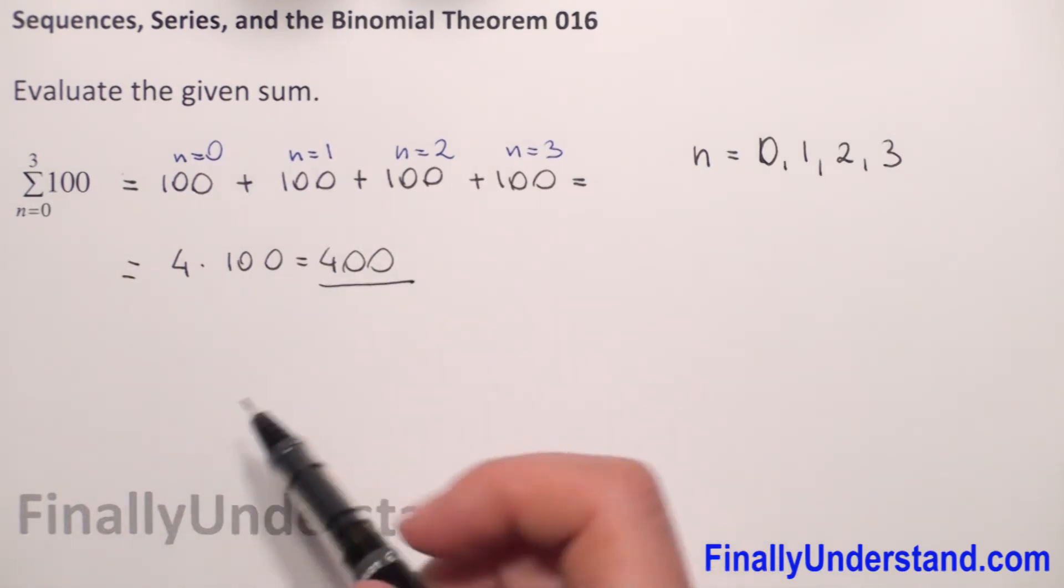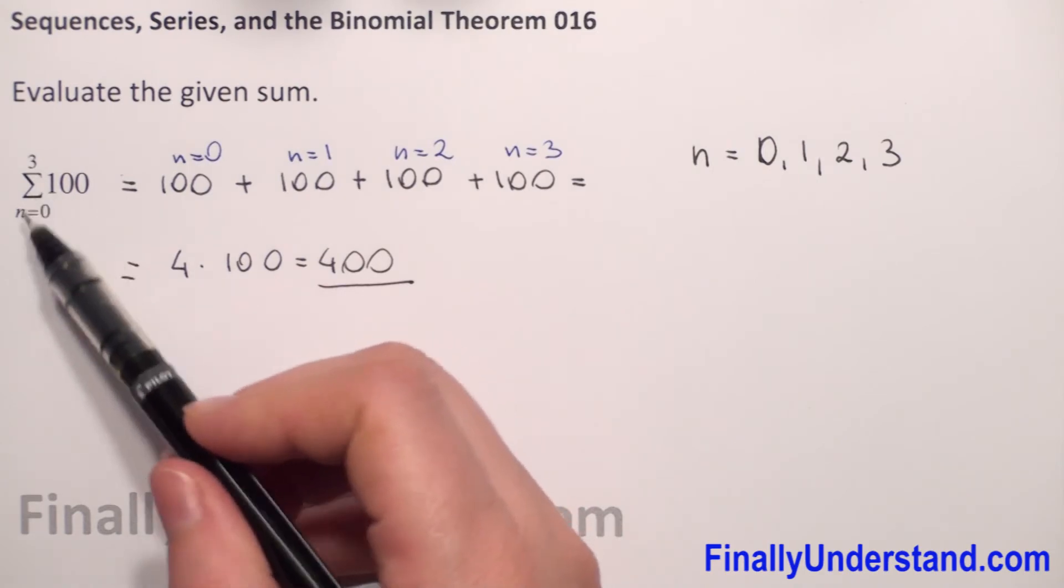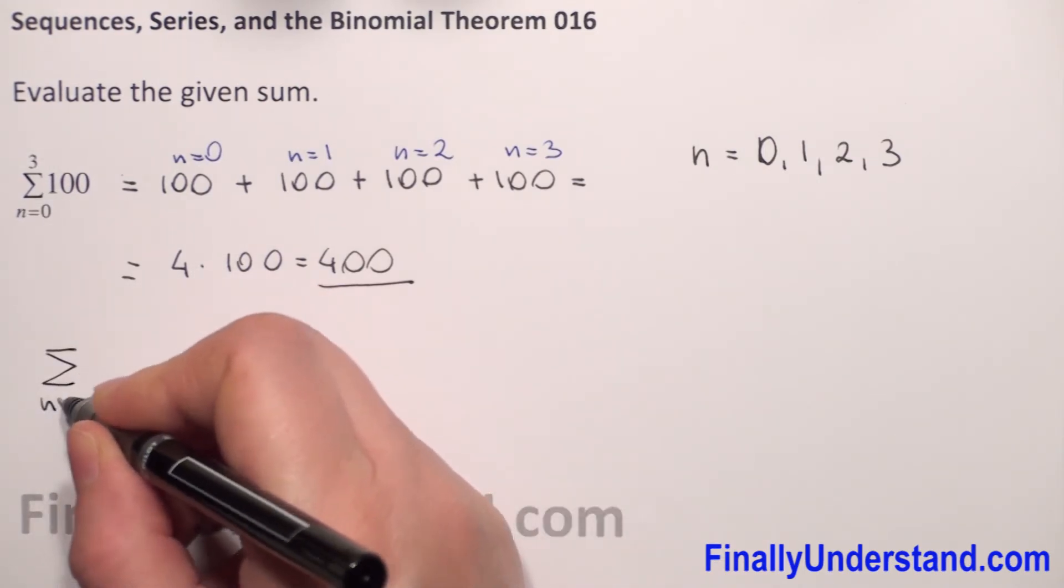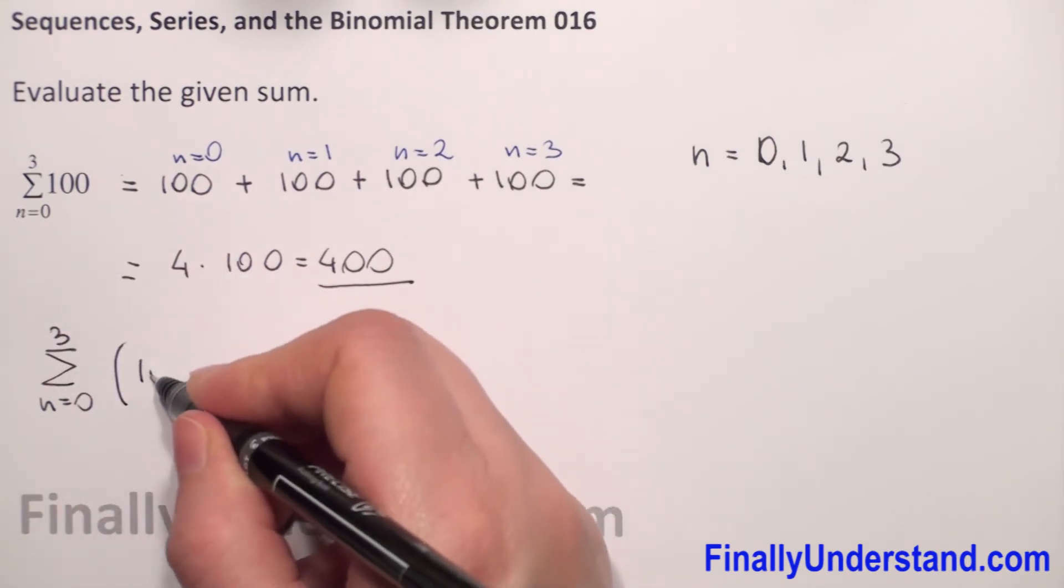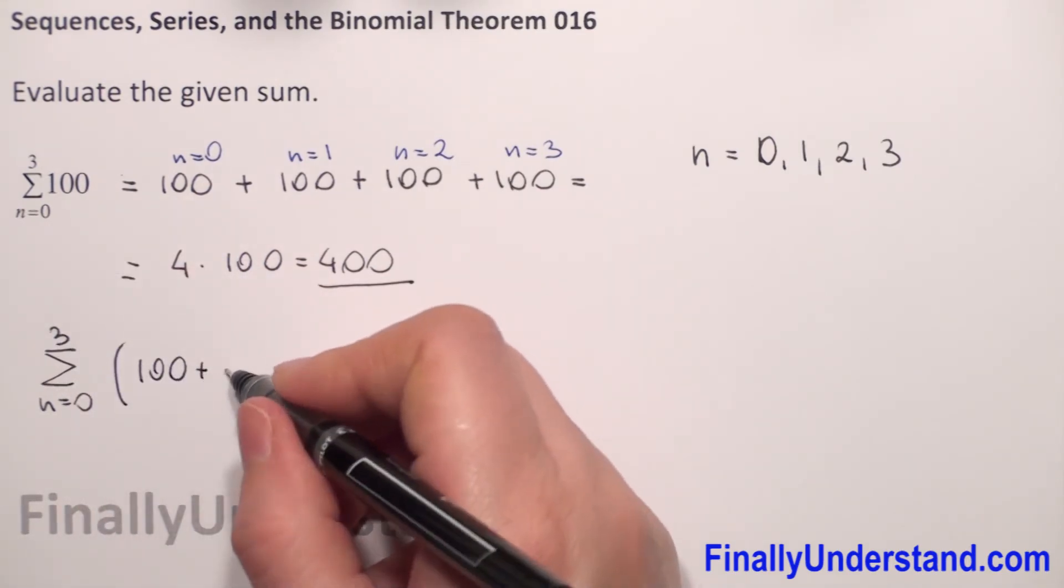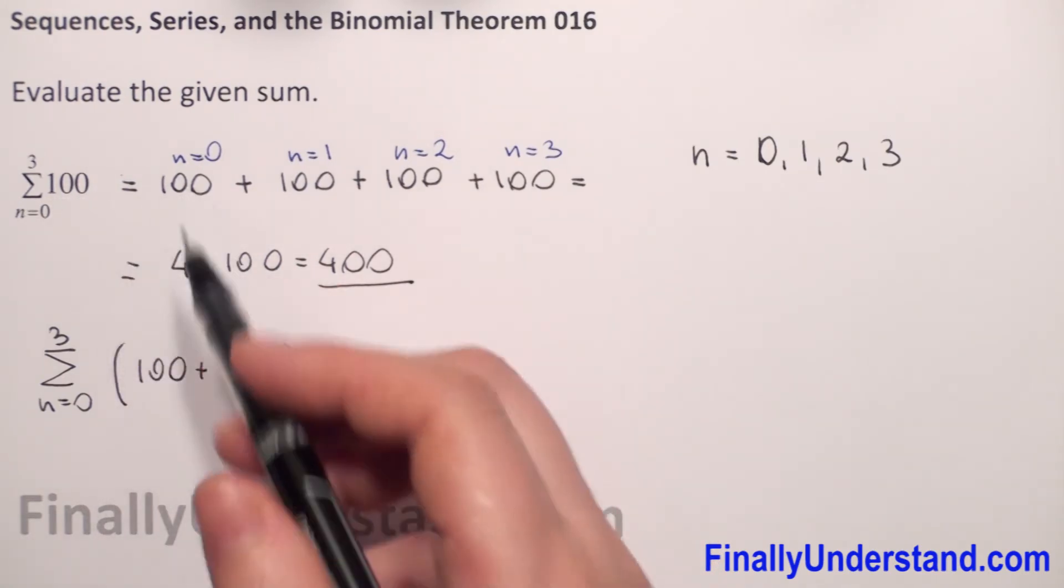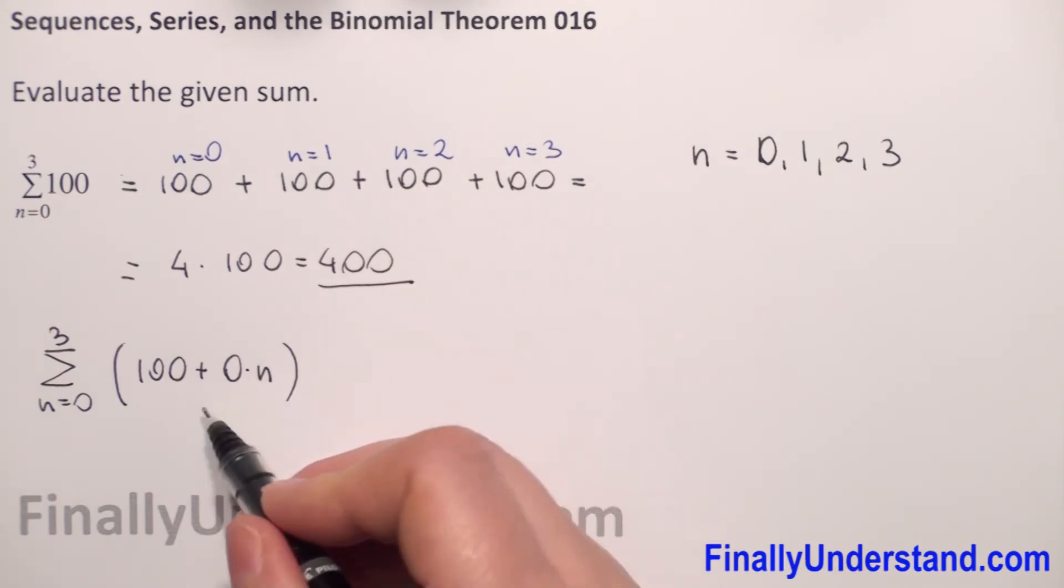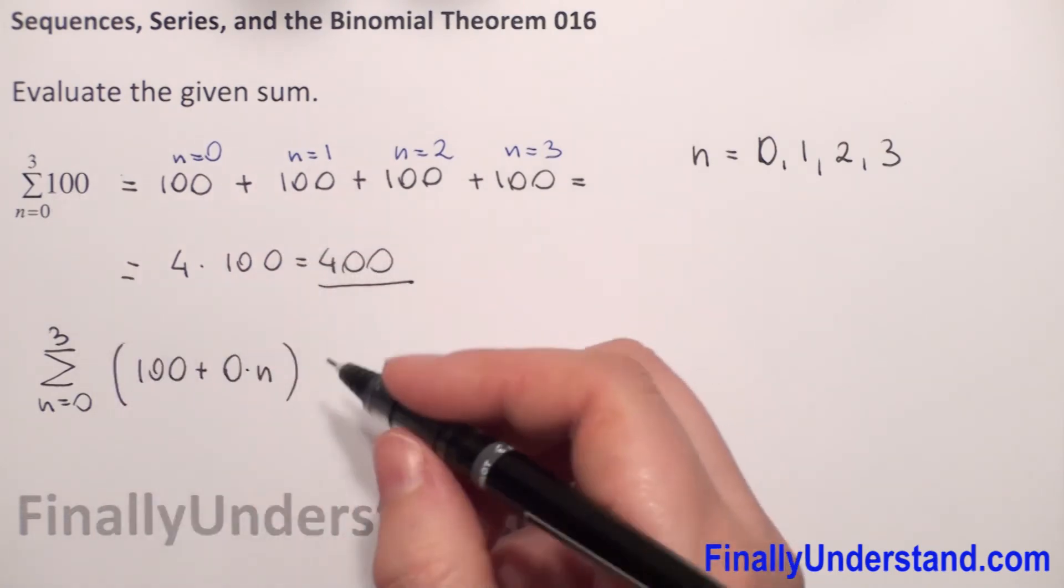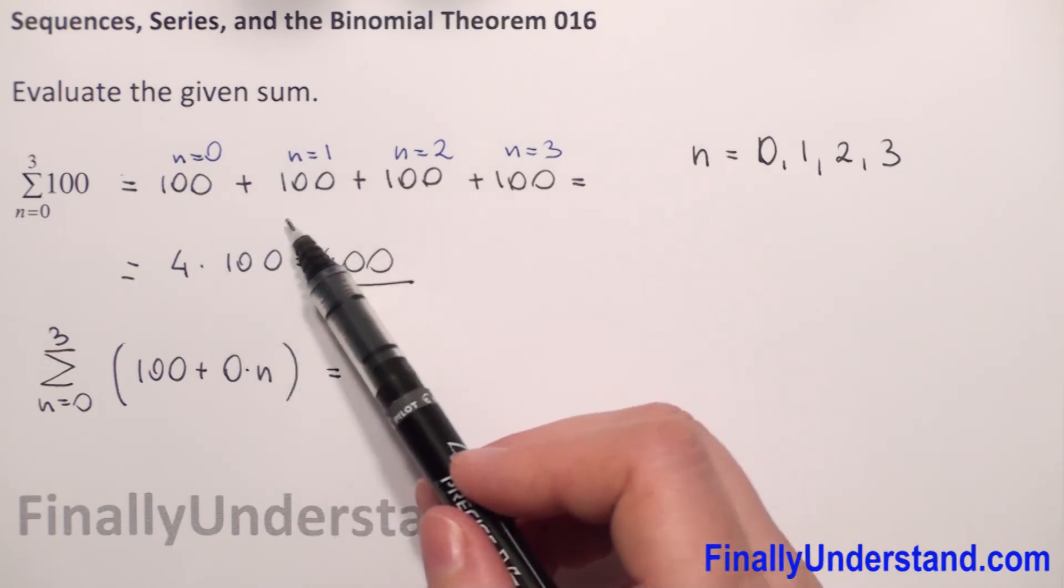Or if you don't see why we have these 4 terms to add, we can rewrite the sum from n equals 0 to 3. We can rewrite this as 100 plus 0 times n, because we don't have any n, so it's like 0 times n. 0 times n is 0.